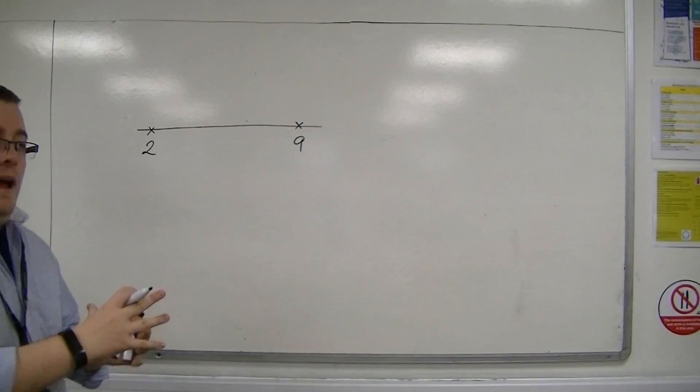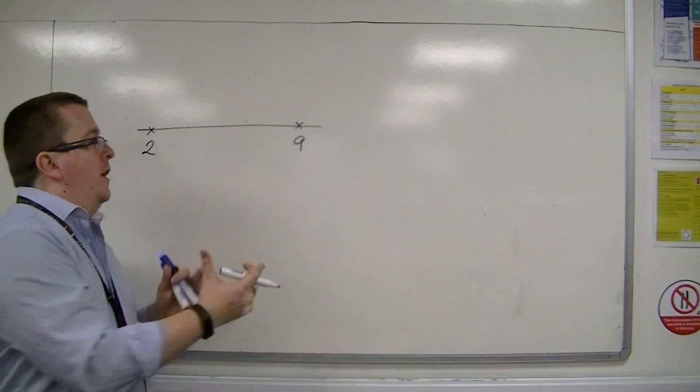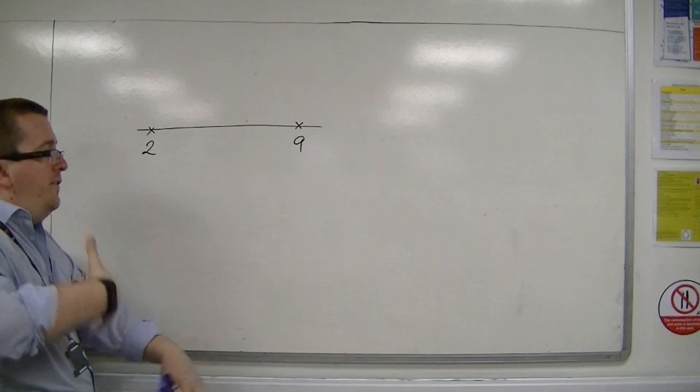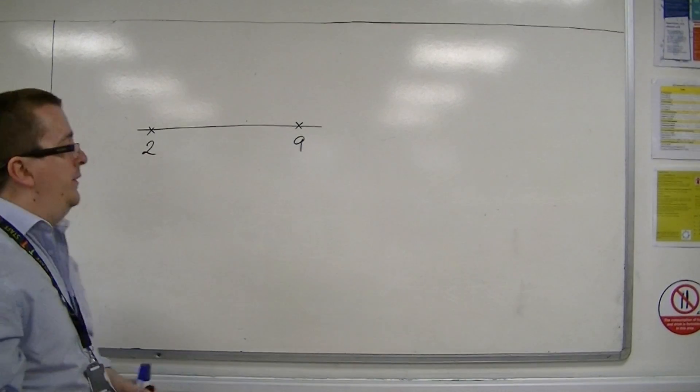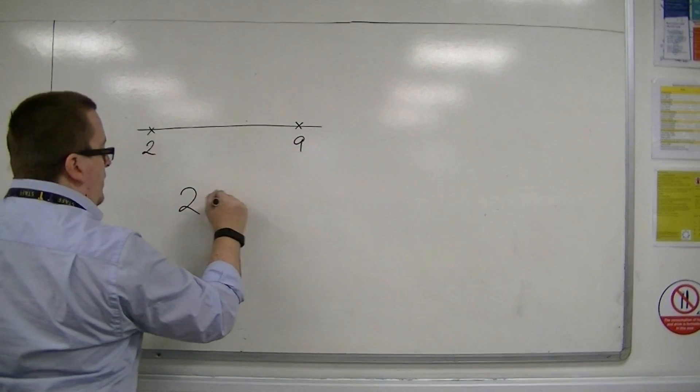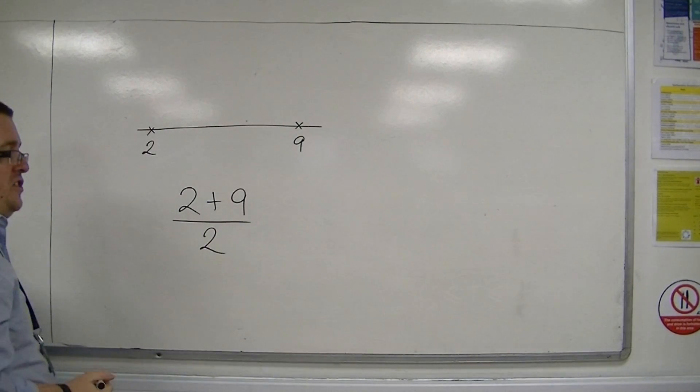Now, without having to try and work it out from either side, there's a very easy way to do this. You just need to add the two numbers together and then divide by 2.